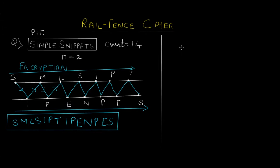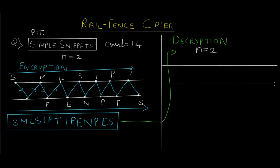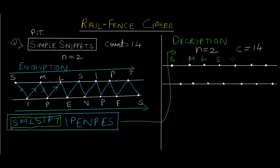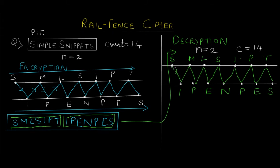Now let's see the decryption process. We have the cipher text with 14 characters and we already know n equals two. So first draw two rails and mark 14 points. Since n equals two, there are seven places on each rail. Take the first seven characters of the cipher text — S, M, L, S, I, P, T — and write them on the top rail. Take the next seven — I, P, E, N, P, E, S — and write them on the bottom rail. Then read in zigzag order to recover the plain text.